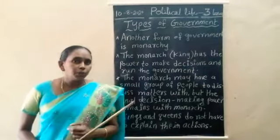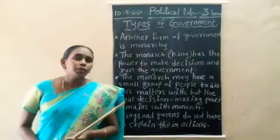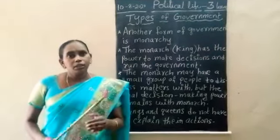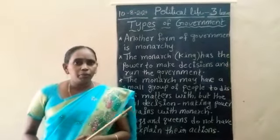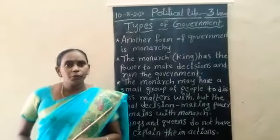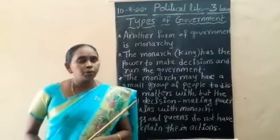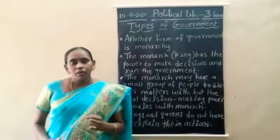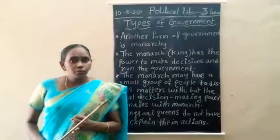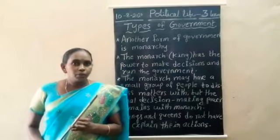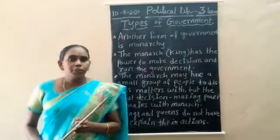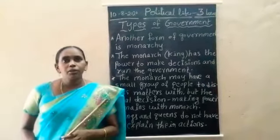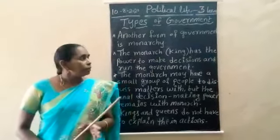In the types of the government, the first one is the democracy form of the government. Democracy means it is the making by the people only. How do the people make the democracy form of government? By elections they are going to make the government. The people give their vote and elect their representatives.